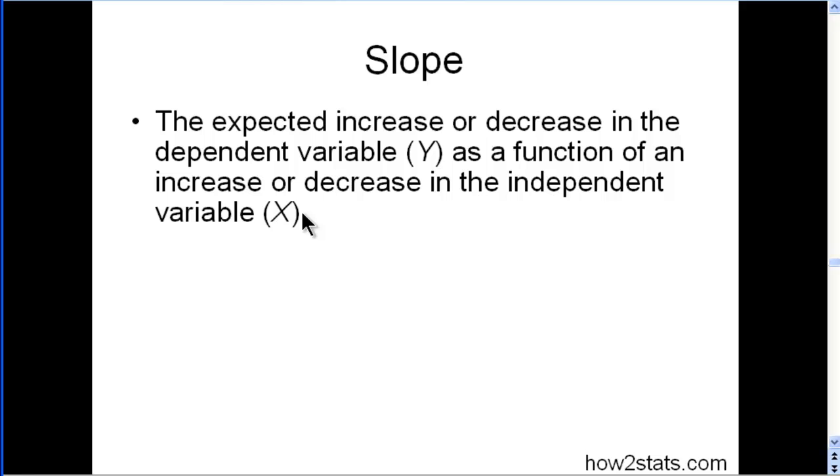By exactly how much? That's what the slope is going to tell us. And this is the formula. I assume you know what a correlation is. So beta, or the slope, equals r, Pearson correlation, multiplied by the ratio of the standard deviation in Y (colds) divided by the standard deviation in X (stress).